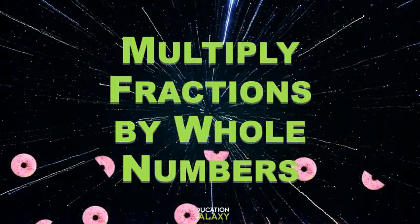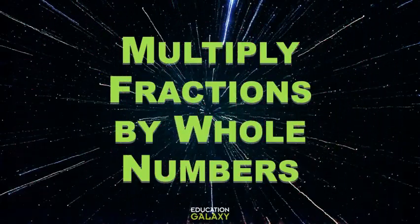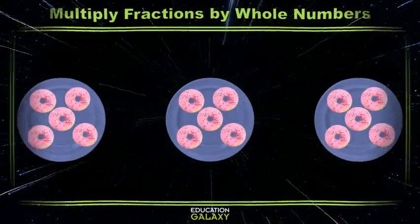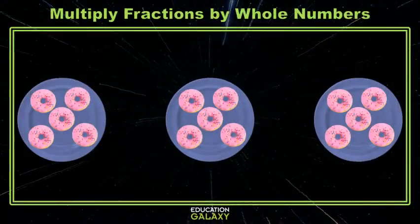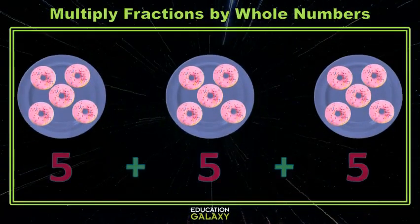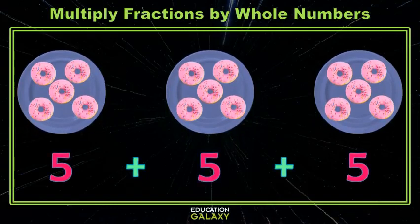Let's take a trip back in time. Do you remember when we'd have three equal groups of objects, and you'd be asked to find the total number of objects? For instance, here, I have three plates with five donuts. If I wanted to find the total, I could add five three times. That's repeated addition.